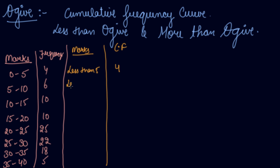Less than 10: the students who scored less than 5 are also less than 10, so this becomes 4 plus 6, which is 10. Again, less than 15: all the students who scored less than 10 and less than 5 are also less than 15, so 10 plus 10 is 20.